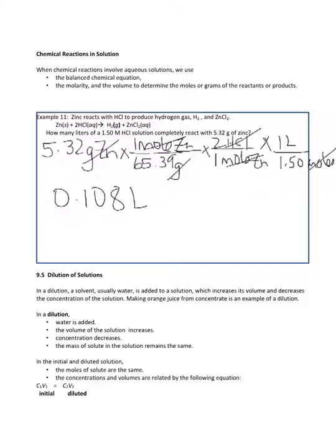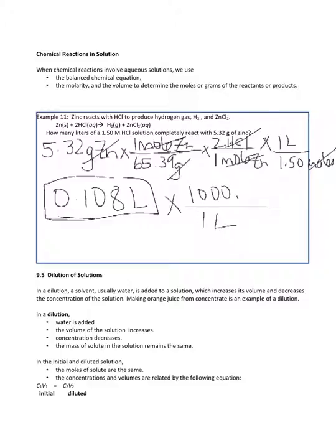You've measured things with graduated cylinders in your labs — 0.108 liters is not easy to measure. The question asked for liters, but realistically in the lab you'd want milliliters. There are 1,000 milliliters in a liter, so 0.108 liters is 108 milliliters, which is much easier to measure out.